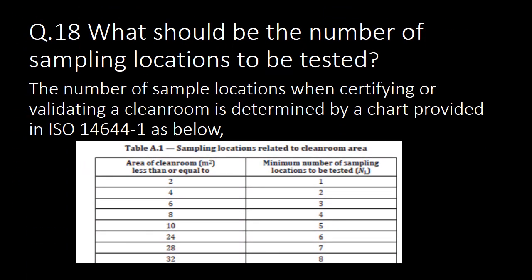What should be the number of sampling locations tested for non-viable particle count? The number of sample locations when certifying or validating a clean room is determined by the chart provided in ISO 14644-1. The chart correlates the area of the clean room in square meters to the minimum number of sampling locations to be tested.